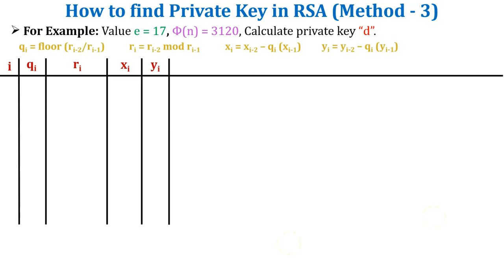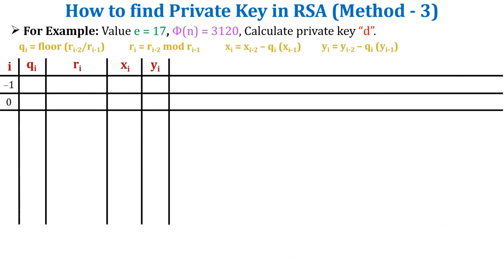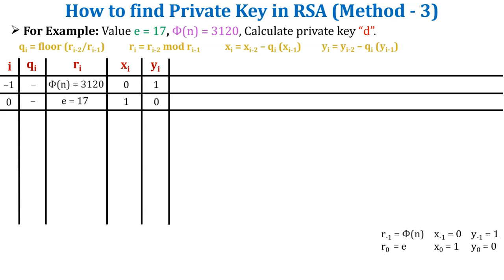In method 3, the initial iteration values are i = −1 and i = 0. There is no quotient for initial values, but it will be updated in each iteration. R(−1) = phi(n) = 3120 and R(0) = e = 17. The unit coordinate values are: x(−1) = 0, x(0) = 1, y(−1) = 1, and y(0) = 0.